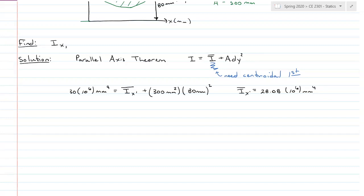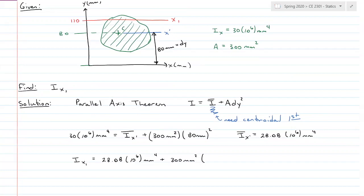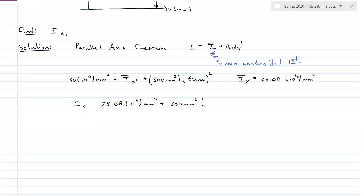So IX prime bar is equal to 28.08 times 10 to the 6th millimeters to the 4th. Centroidal inertia is always going to be the smallest inertia, which makes sense if we're talking about moments. The longer the moment arm, DY, the bigger the moment, right? So same thing here. Now that I have the centroidal, I can move to IX1, which is going to be my centroidal, 28.08 times 10 to the 6th millimeters to the 4th, plus my area, 300 millimeters squared. And then the distance I want to travel again, so I'm at the centroid, and I want to move up here to this red line. So this is going to be 30 millimeters. So 30 millimeters quantity squared, and IX1 will be 28.4 times 10 to the 6th millimeters to the 4th.